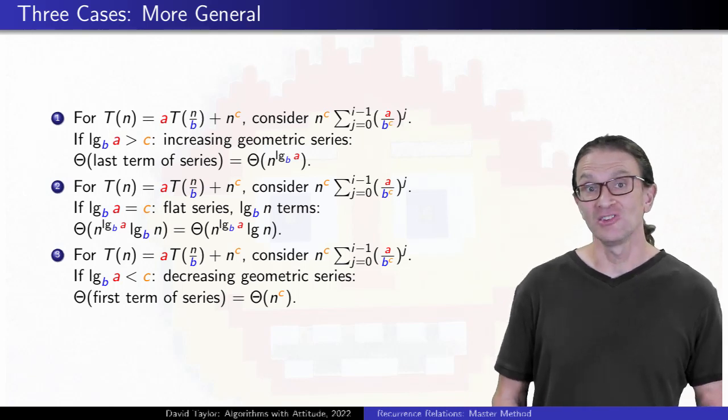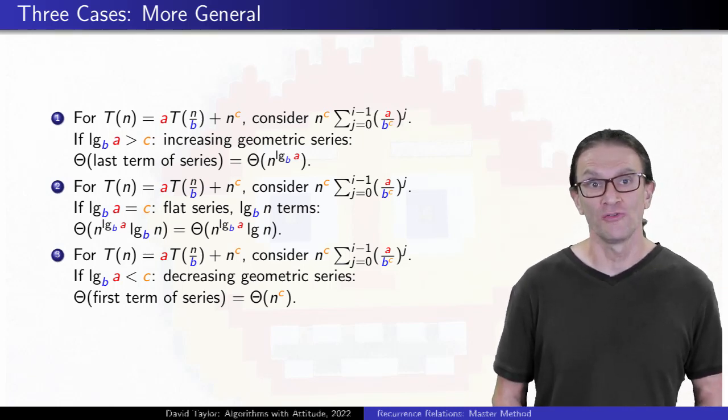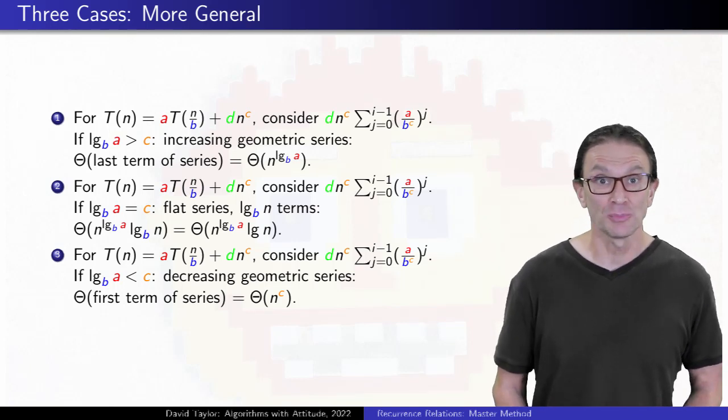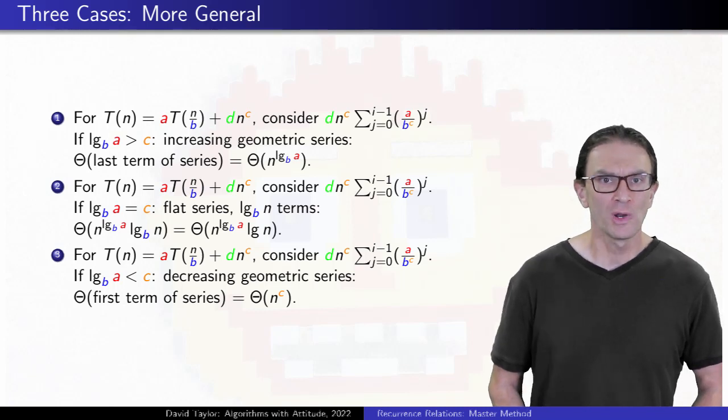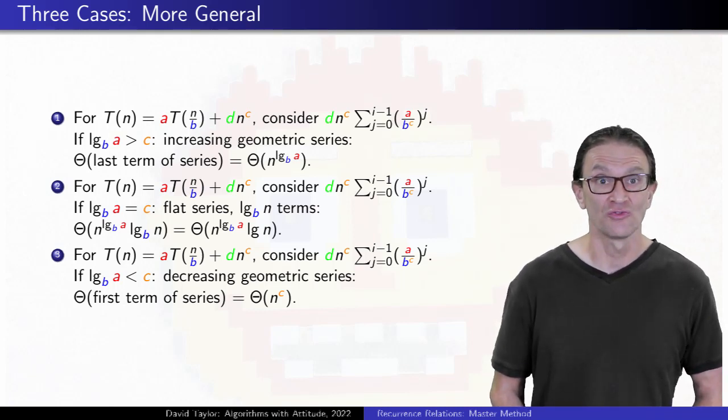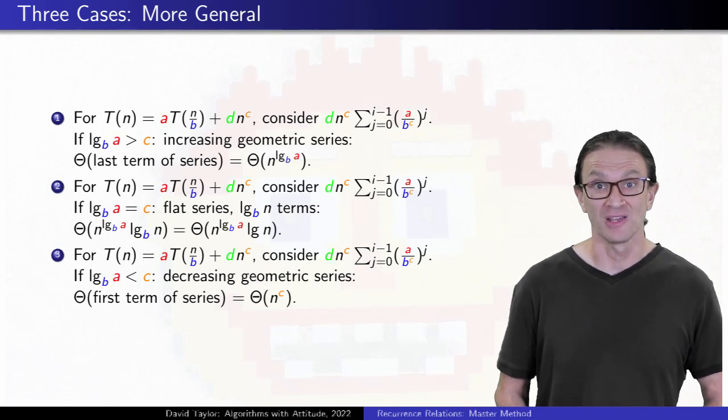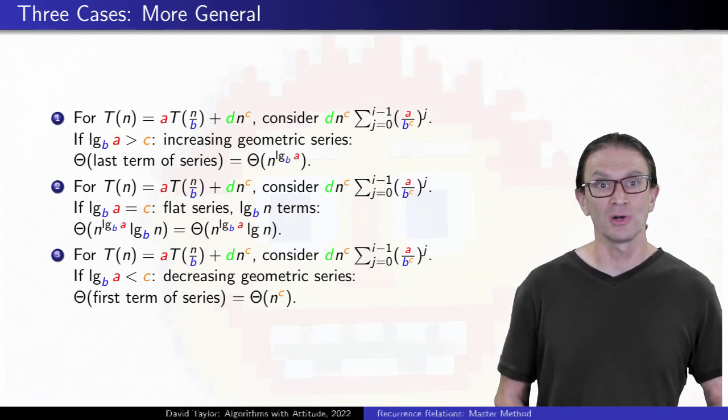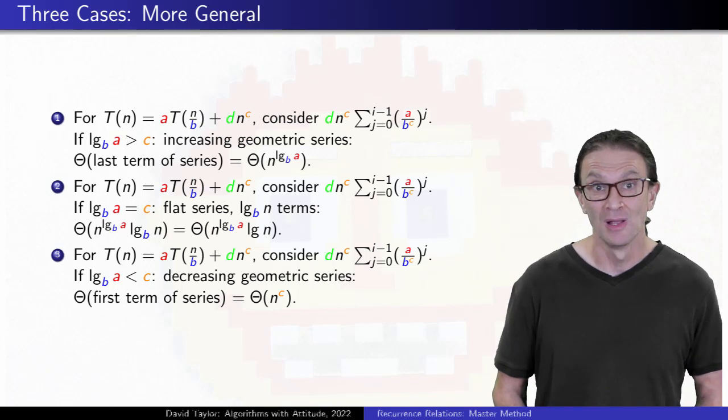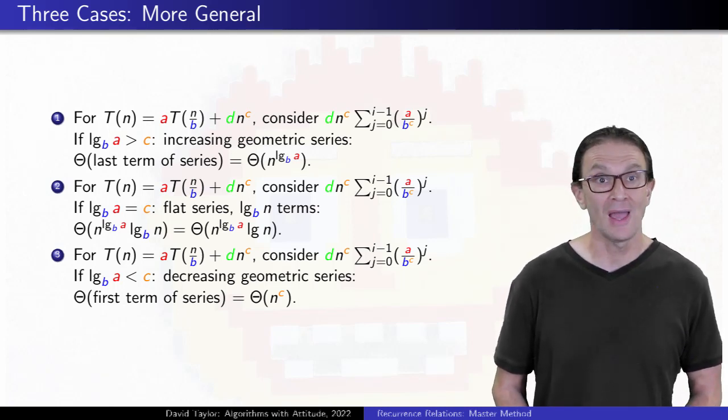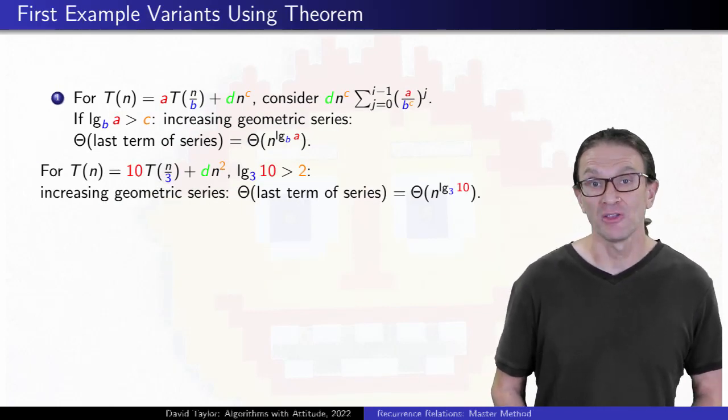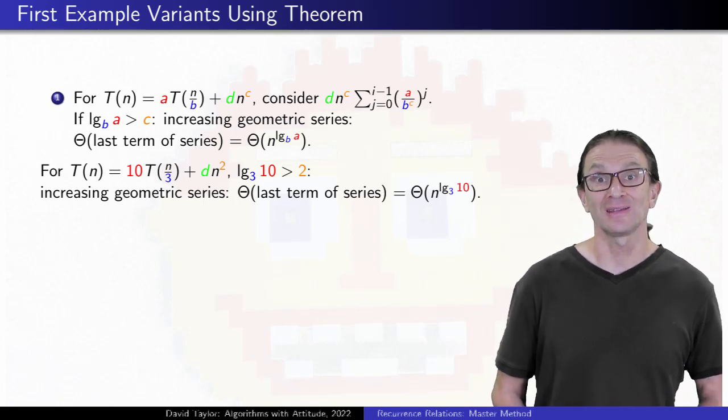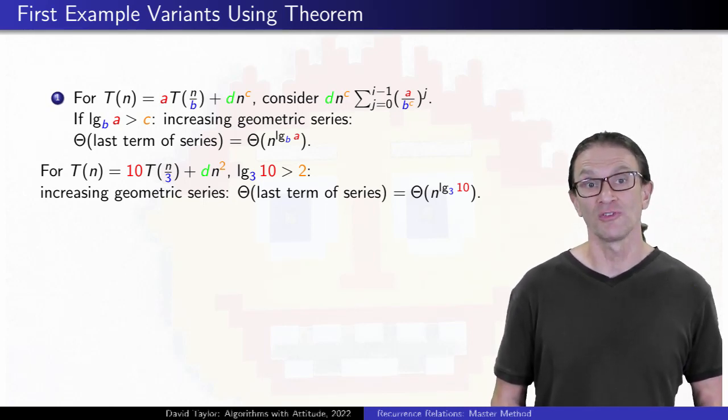And what if you multiplied that n to the c term by some different coefficient? For all cases, it just multiplies through and gets swept into the theta growth term. Nothing really changes. We don't really know what one unit of this function represents anyway. Multiplying that function by 60 might just be converting the answer from minutes into seconds if it is time. The order of growth will be the same. So now, if we want to redo that first example, by comparing log base B of A against C, we can now see which case we are in, and the case we are in tells us the growth of the function.